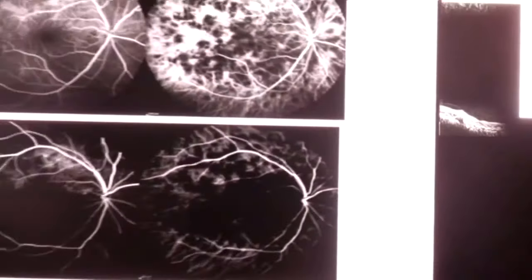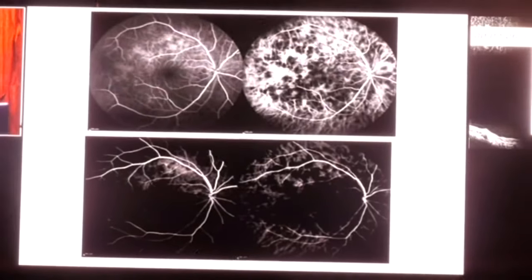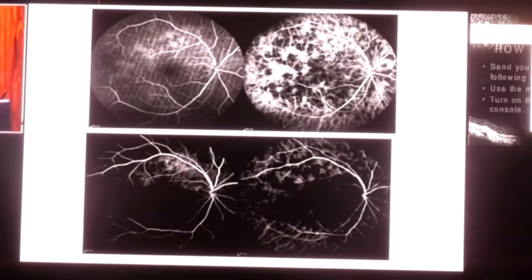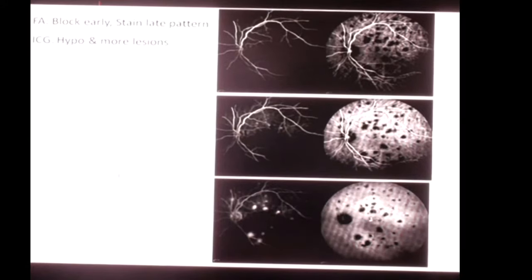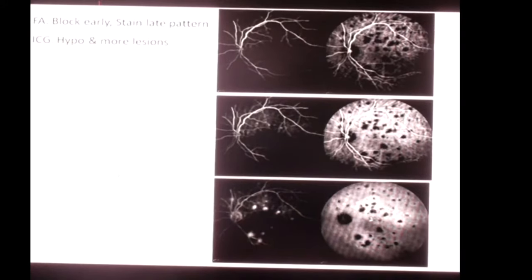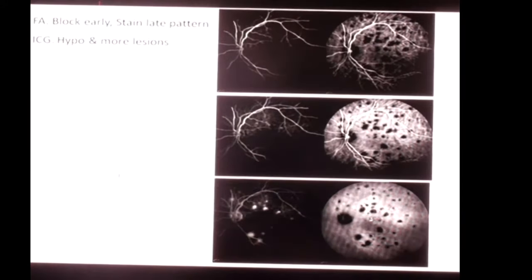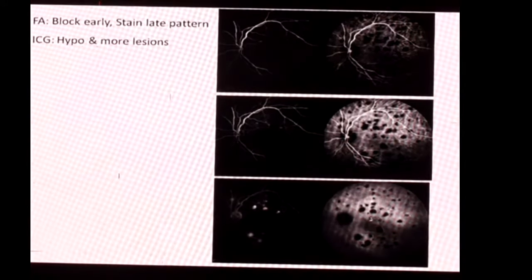Towards the later stages, these lesions start staining on FFA, but the ICG remains hypo. In fact, ICG shows more lesions than FFA. The typical pattern is: fluorescent angiography shows block early and then stains later, while ICG shows more hypofluorescent lesions overall.